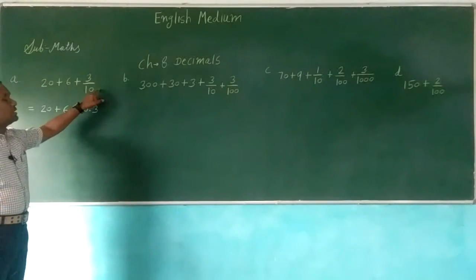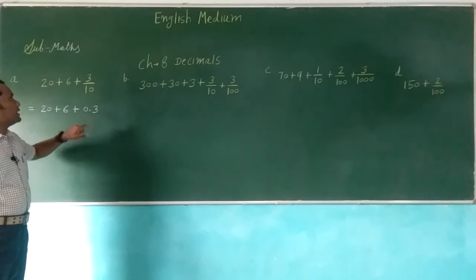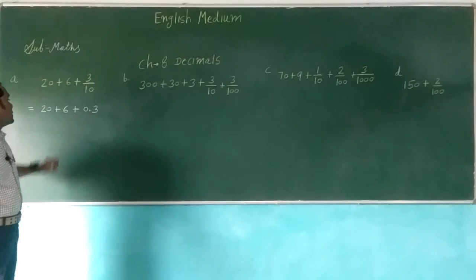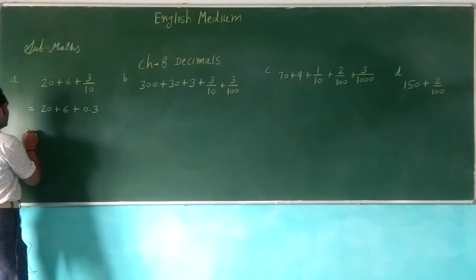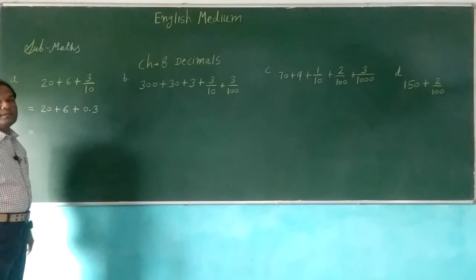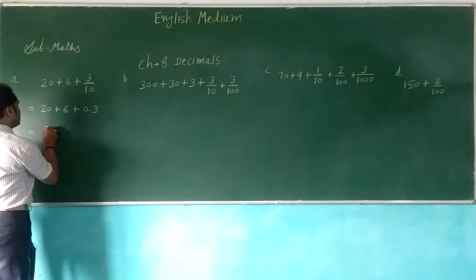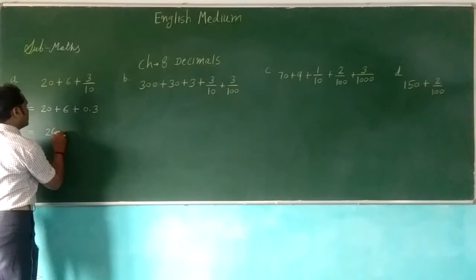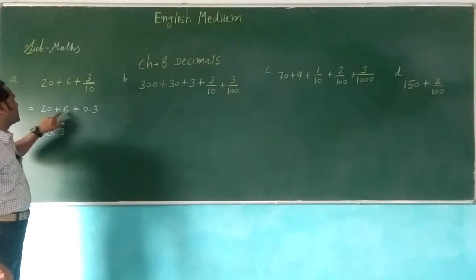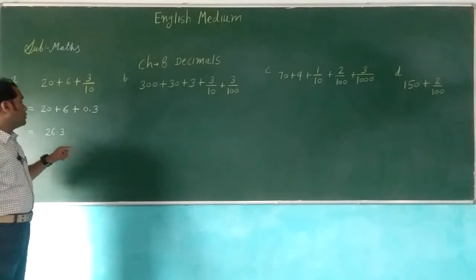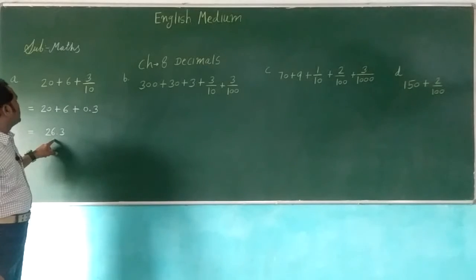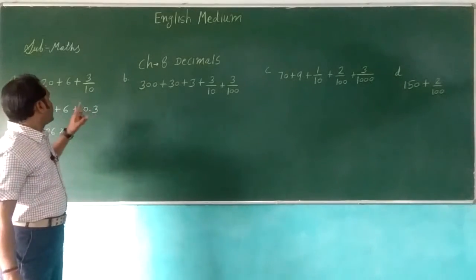We'll change this fraction form into the decimal form. Here 0.3 means the decimal point is given. Now it is very easy to add. 20 plus 6 is 26, plus 0.3 means 26.3. Very easy to add.